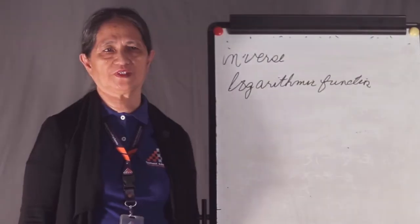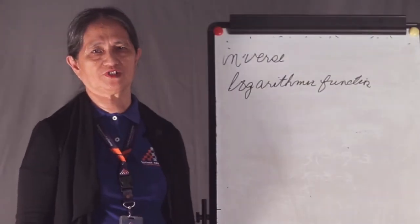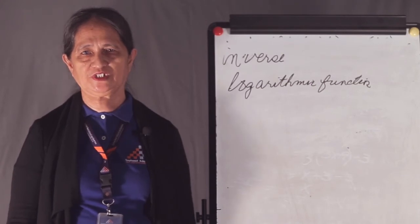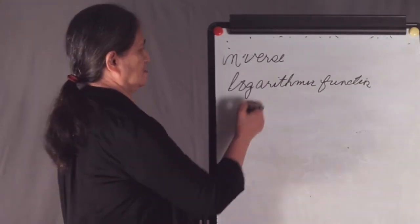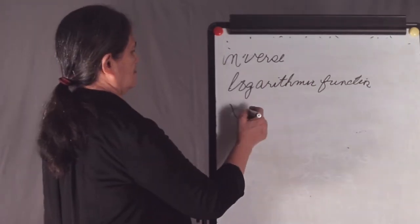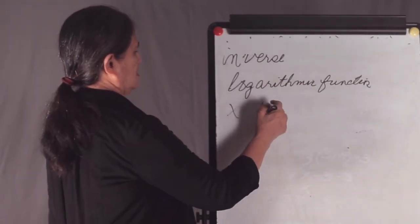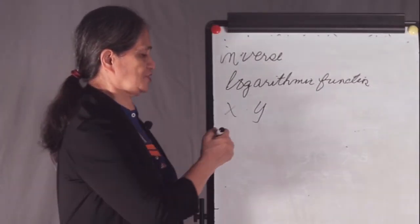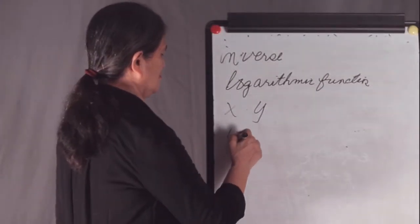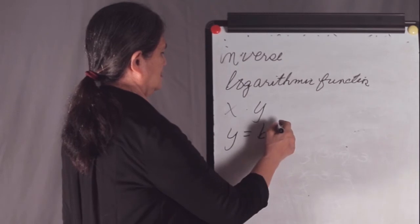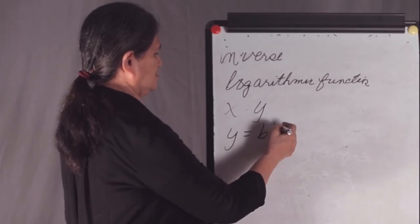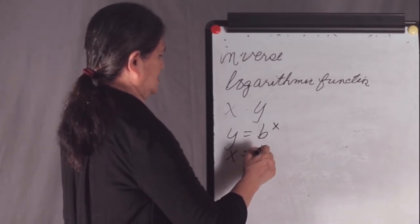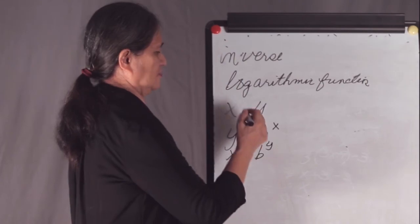Recall that the inverse function involves interchanging the role of x and y. The inverse exponential function of y equal to b exponent of x gives us x equals b exponent of y.